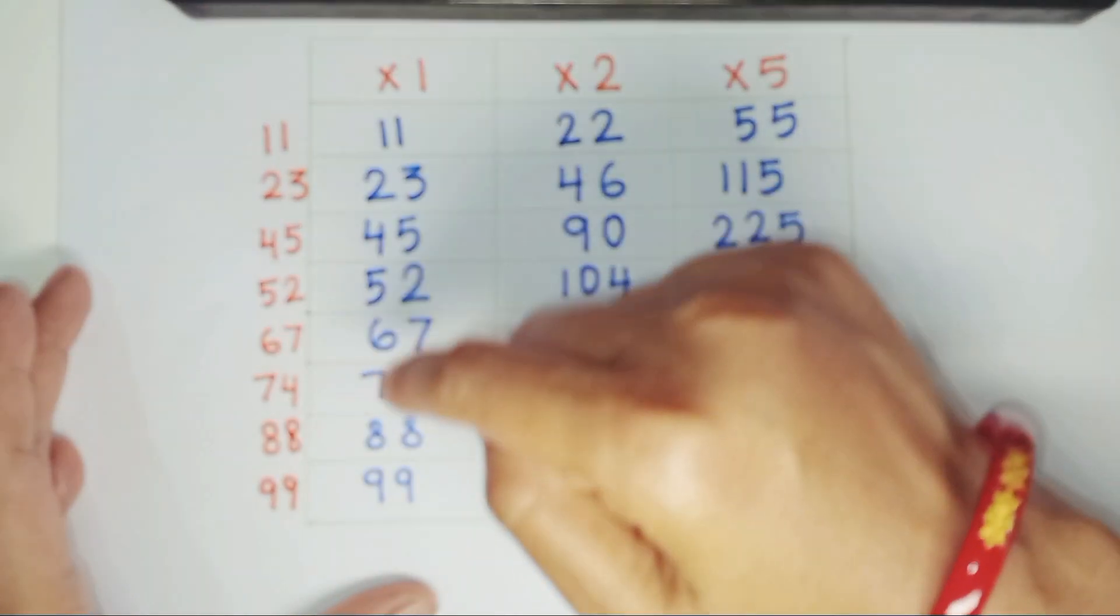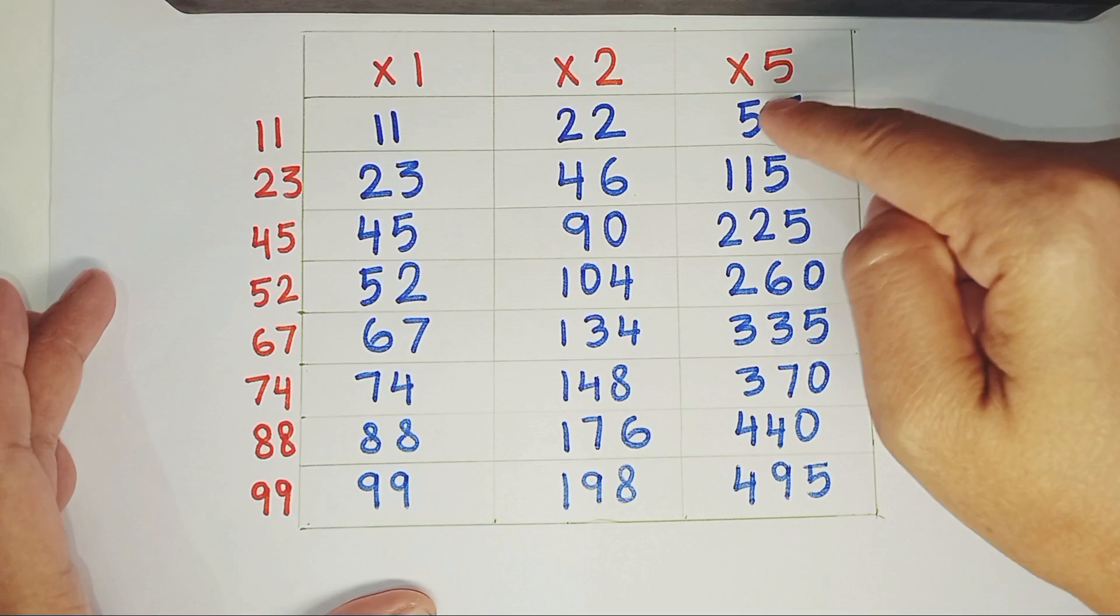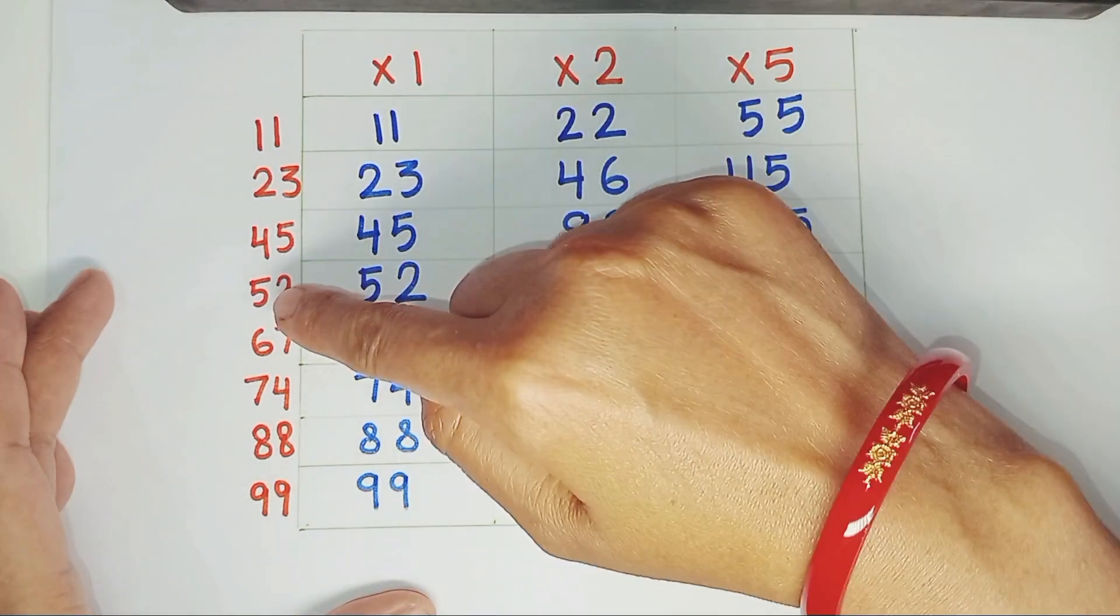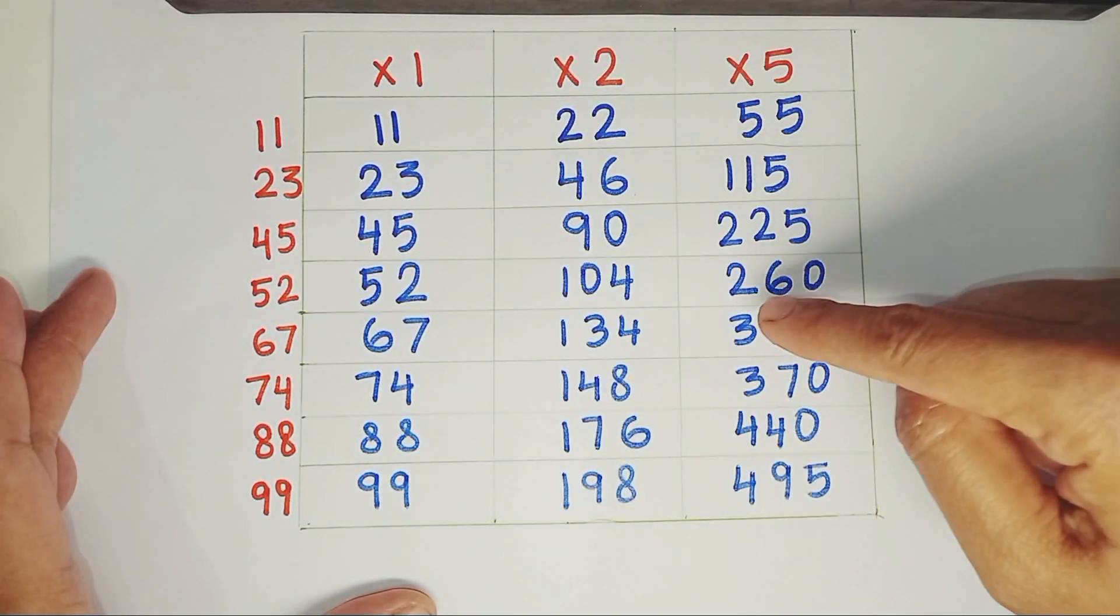11 times 1, 11. 11 times 2, 22. 11 times 5, 55. In the same way, 52 times 1, 52. 52 times 2, 104. 52 times 5, 260.